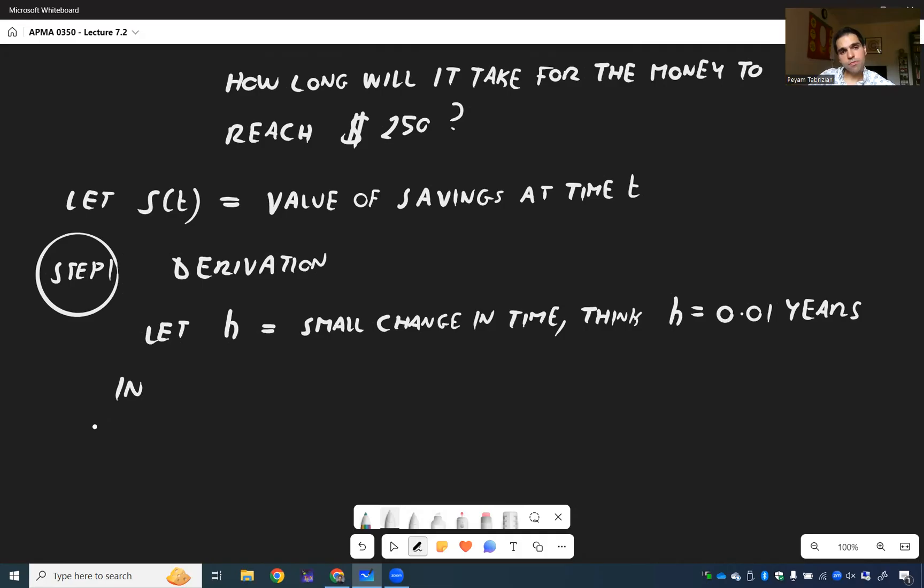So in h amount of time, or maybe in h years, of course, you will get money because that's the point of savings. And let's see how much. So first of all, I mean, in 0.01 years, your savings will not suddenly blow up. You will get just a little bit of savings. So it makes sense that it's proportional to h, at least in this simple model.